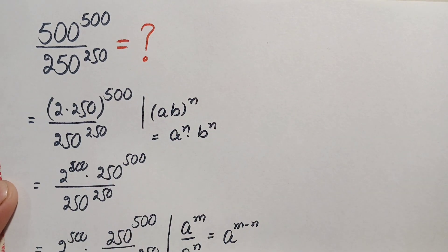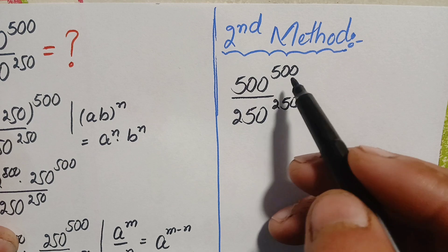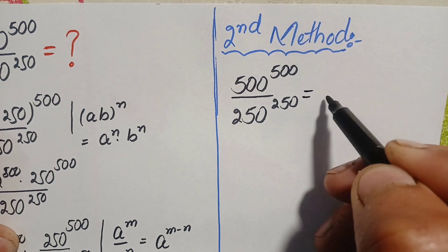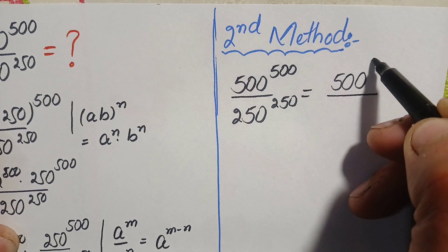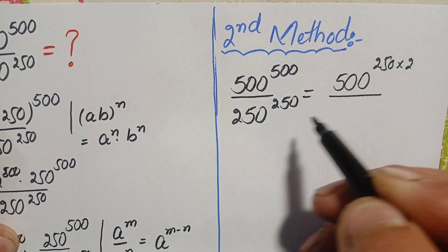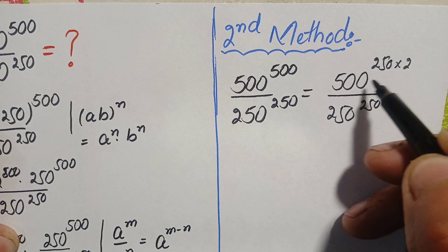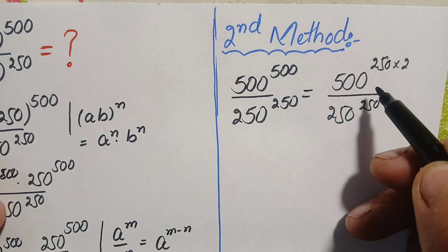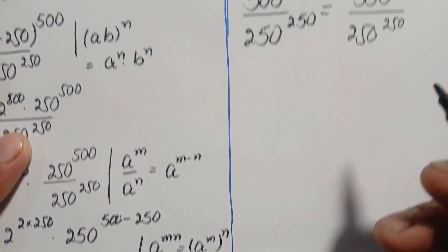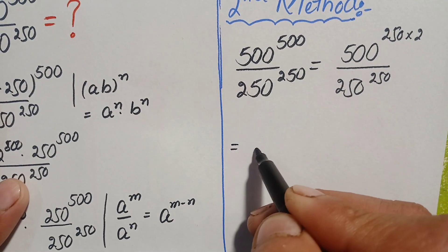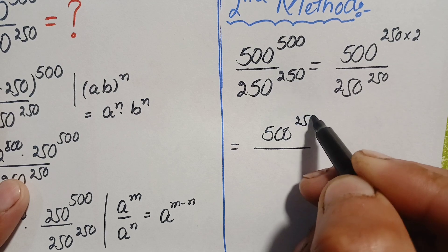Now we solve the problem using the second method. We again factorize 500 in the exponent: 500 raised to power 500 can be written as 500 raised to power (250 times 2). Using the power identity, this becomes (500 raised to power 250) squared.